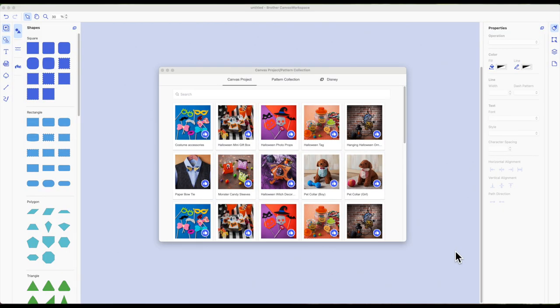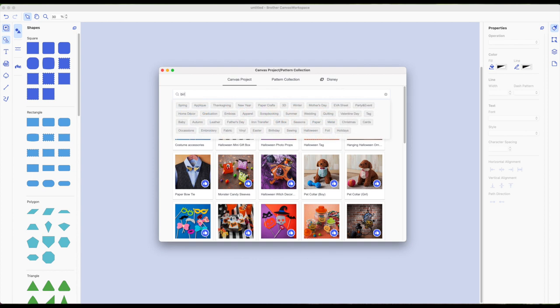All right, here we are at the computer. I already have the canvas workspace open. I'm also using a desktop version. The very first thing it brings up is this canvas project pattern collection window. Inside the search box here, type in the word bird and then click on enter.